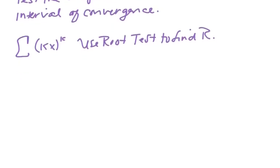Usually we're using the ratio test, but this is begging for the root test since we have one term raised to a power of k. So rho is equal to the limit as k goes to infinity of the kth root of kx to the k.